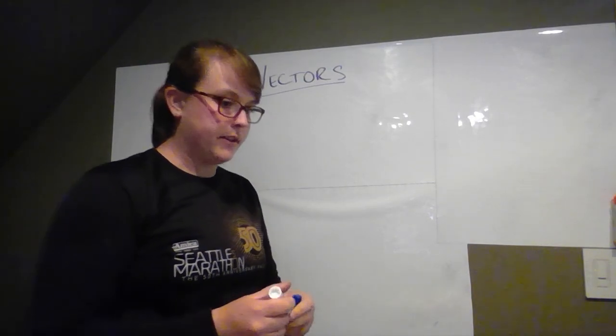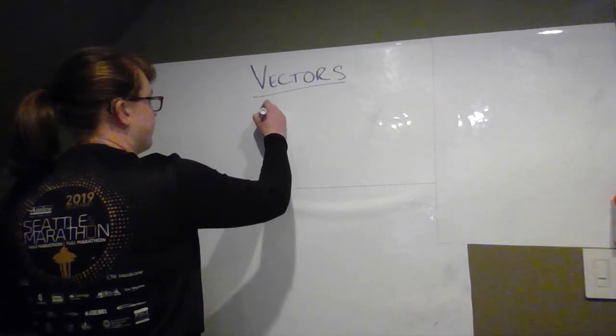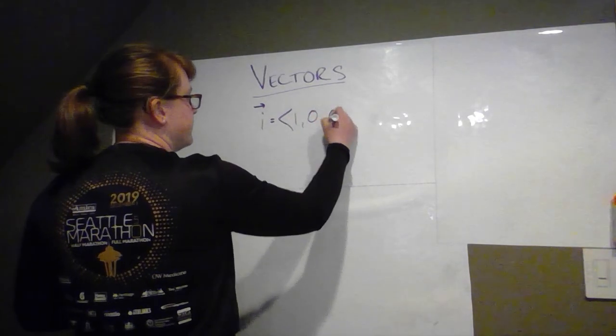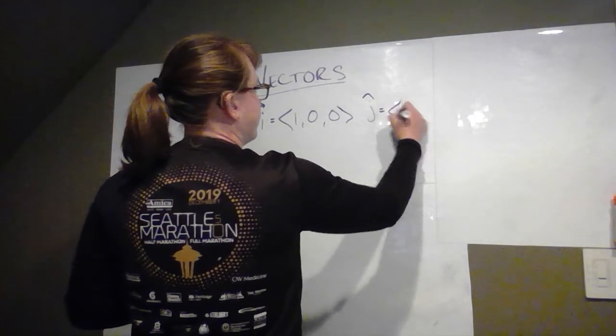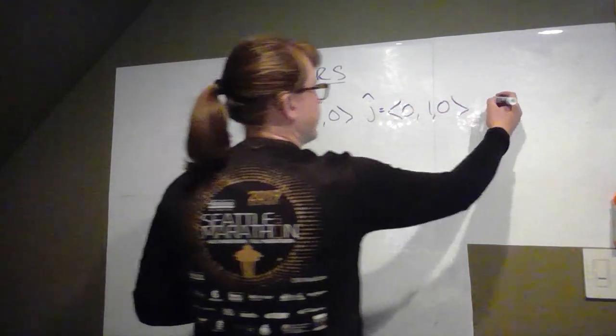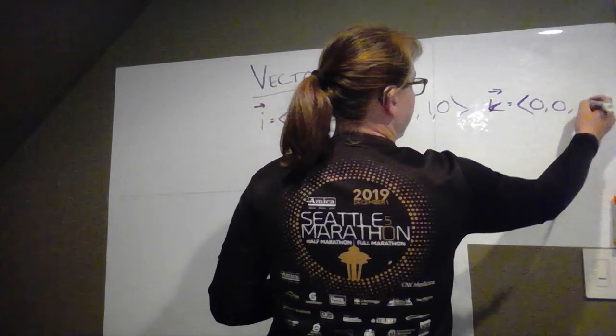So the first thing, the standard basis vectors are denoted as vector i, which is 1, 0, 0, vector j, which is 0, 1, 0, and vector k, which is 0, 0, 1.